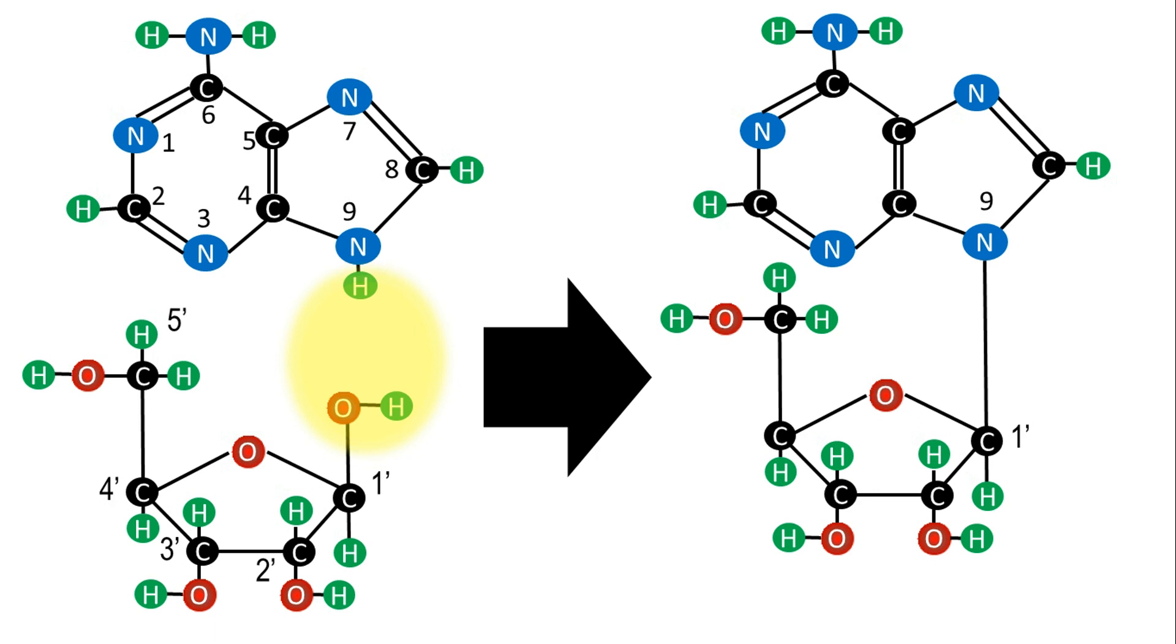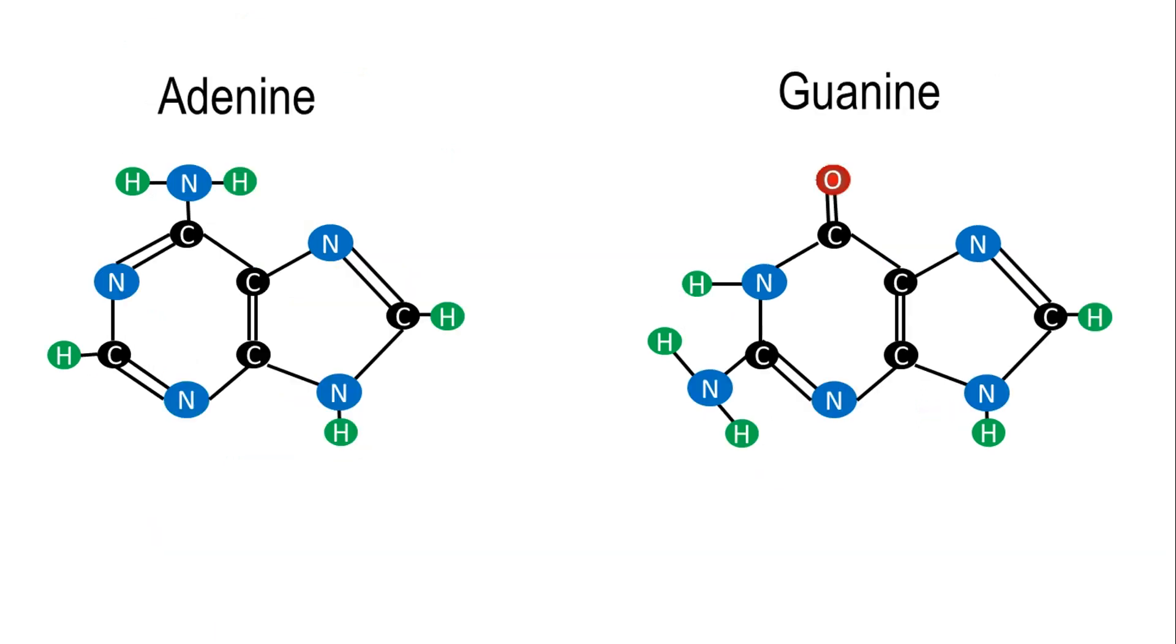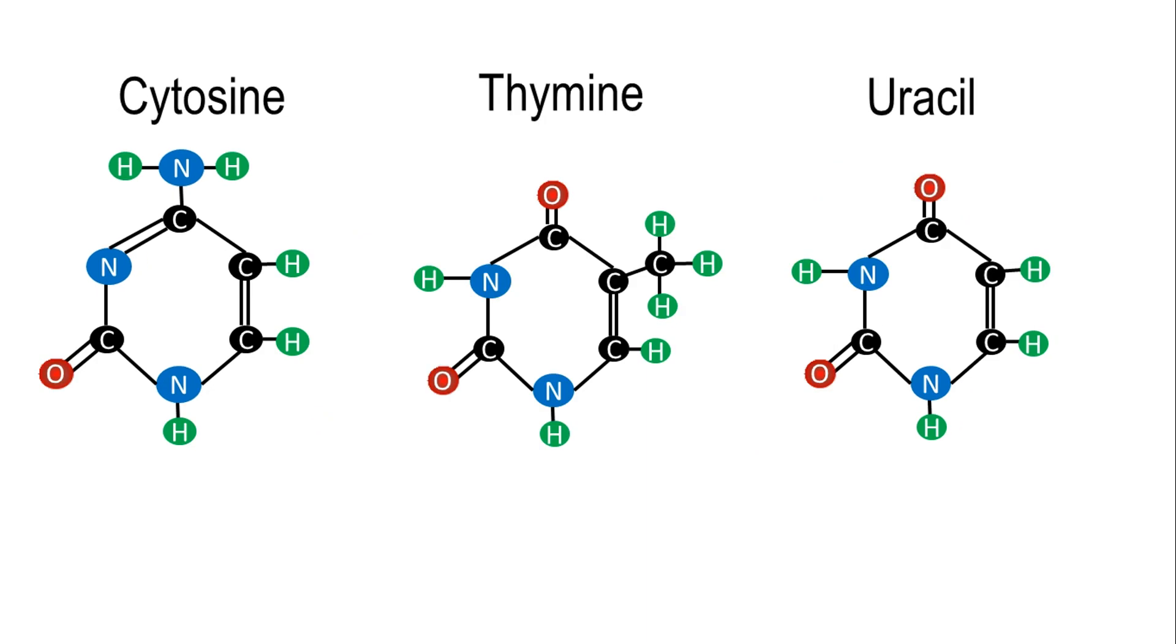The five more common nitrogenous bases are the purines, adenine and guanine, and the pyrimidines, cytosine, thymine and uracil.